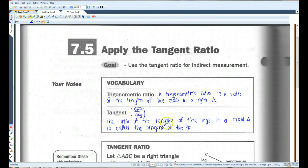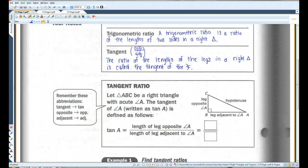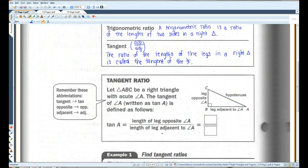The ratio of the lengths of the legs in a right triangle is called the tangent of the angle. I'm going to more commonly call this opposite over adjacent, as you'll see. We'll do some examples and it'll make more sense then. But this is the definition.